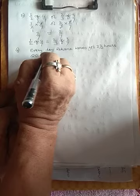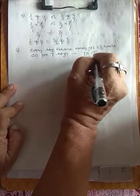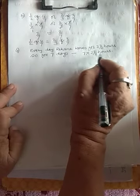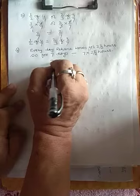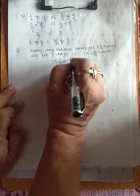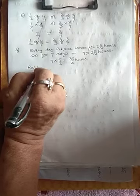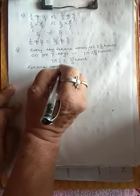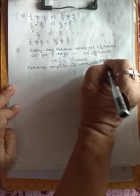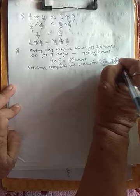For 7 days she would work 7 into 2 and a half hours. Let us change 2 and a half into an improper fraction: 2×2+1 = 5/2. So the total is 7 into 5/2 = 35/2 hours. Let us change this into a mixed fraction: 17 and 1/2 hours.